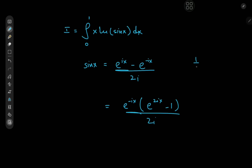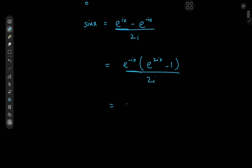Now 1/i is equal to −i, so we can write this as (i/2) · e^(−ix) · (1 − e^(2ix)). This is sine x expressed in that form.